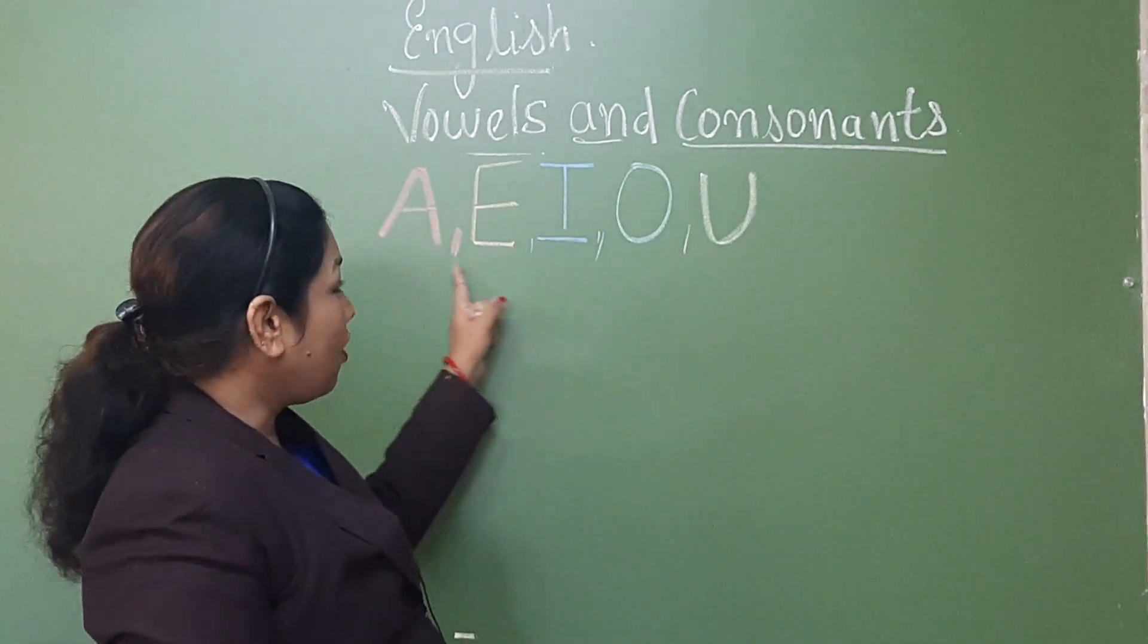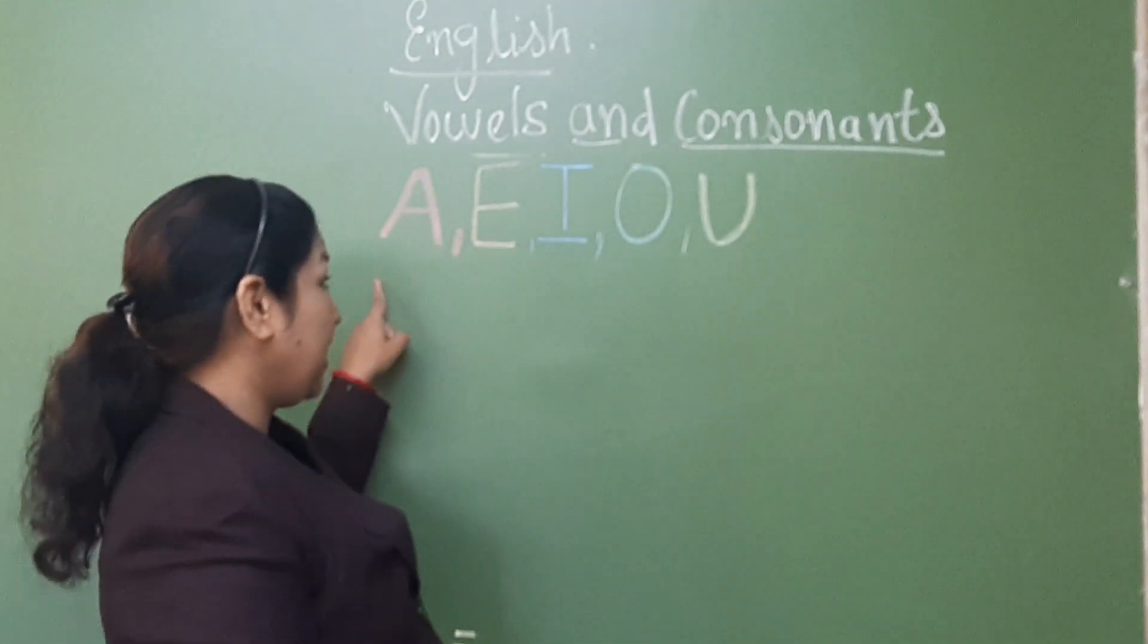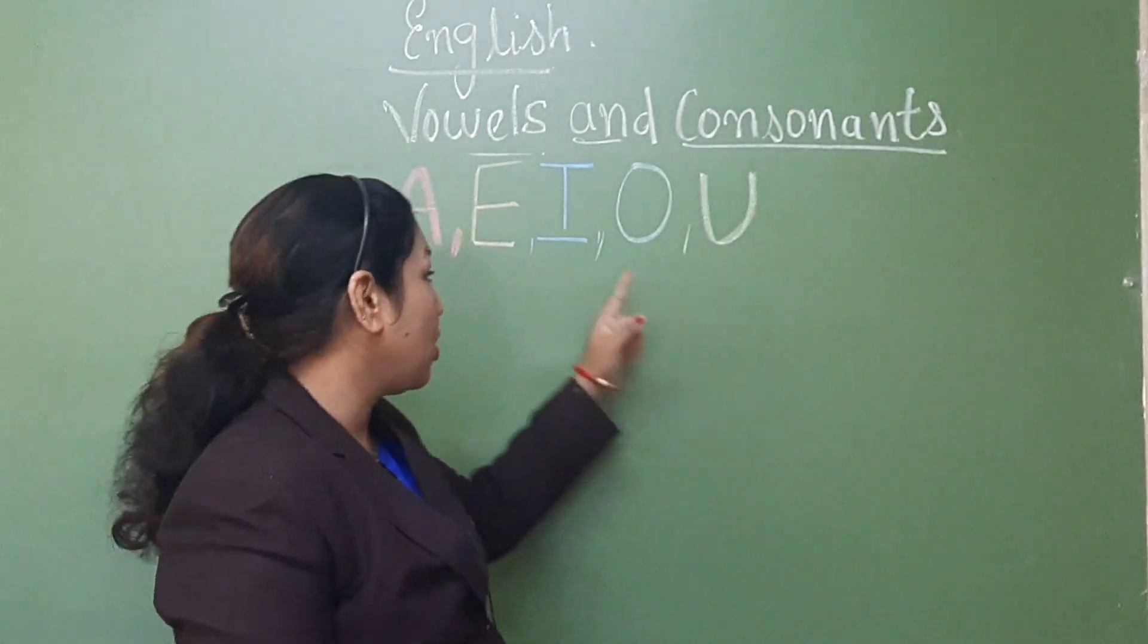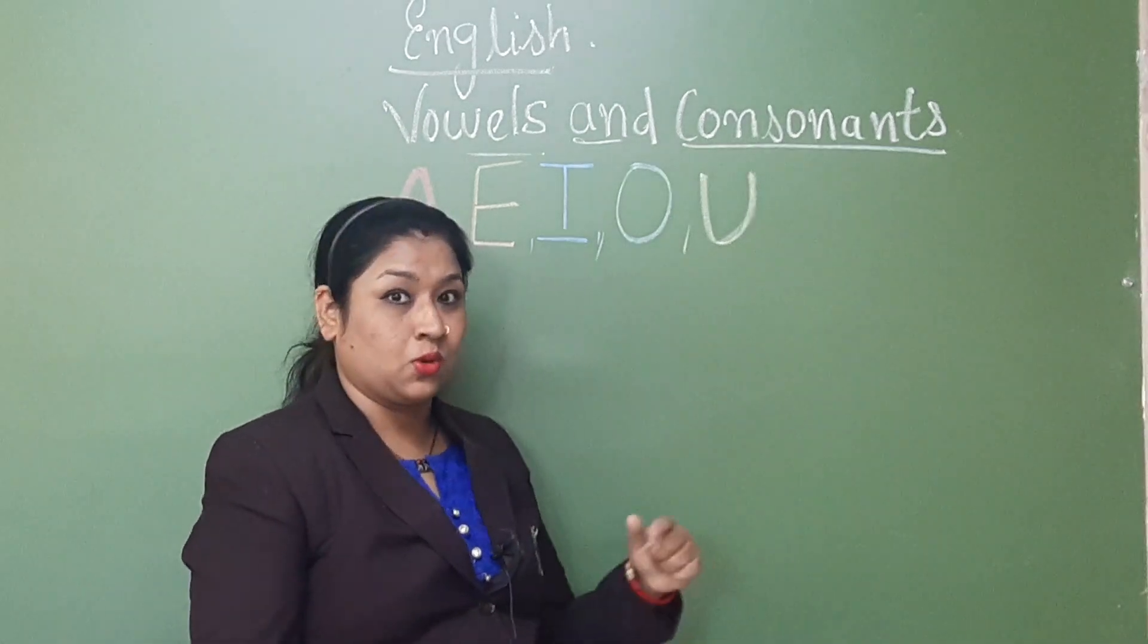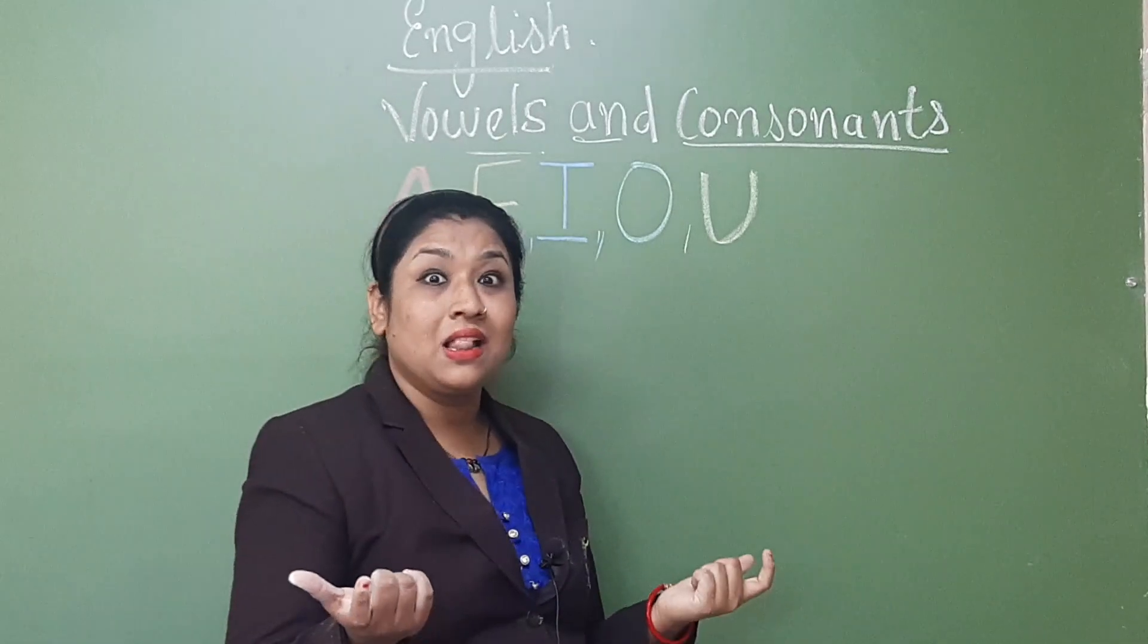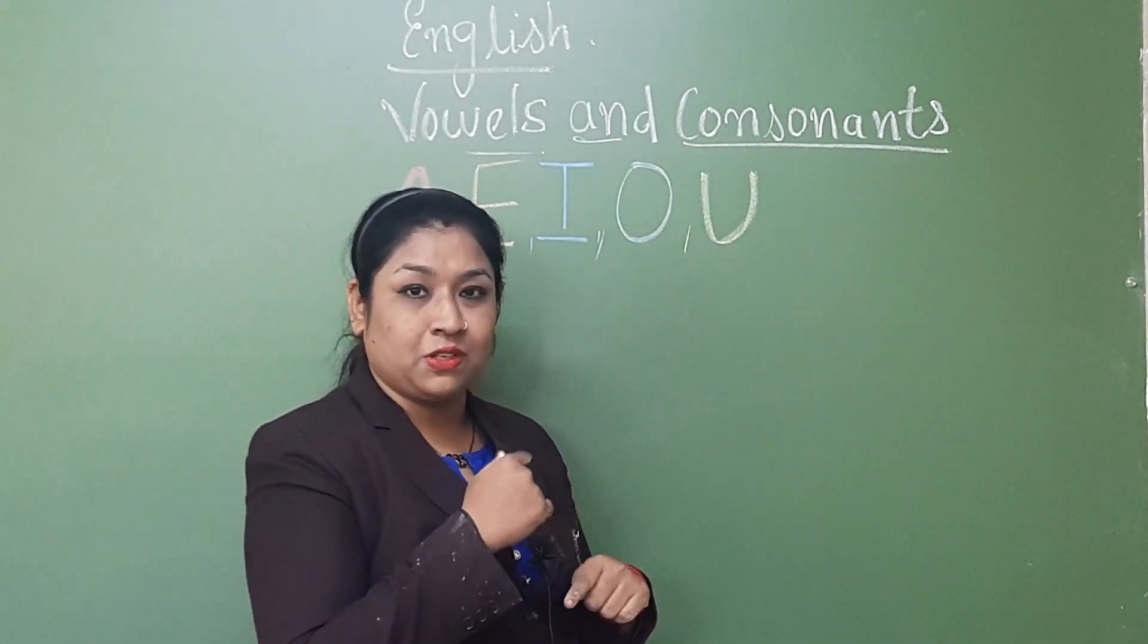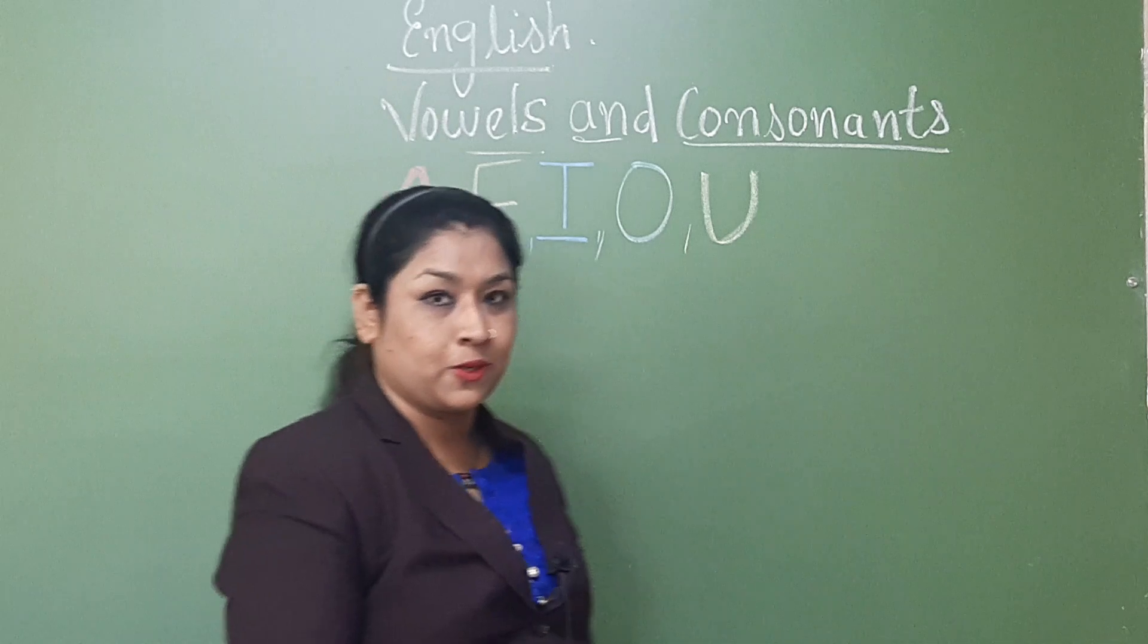See, you can see vowels have written in the colorful. A is in pink color, E is in orange color, I is in blue, O is in green, U is in yellow. So after this we have a beautiful activity, a fun activity also. But before that we will go and see about what is consonants. Here we go.